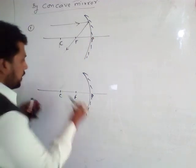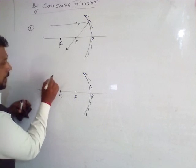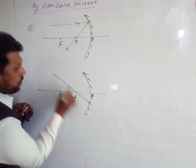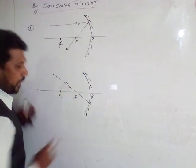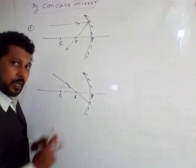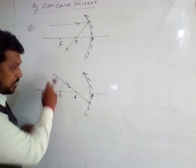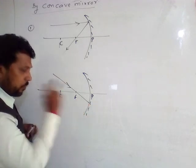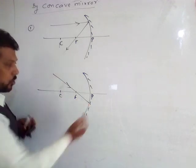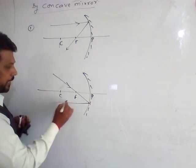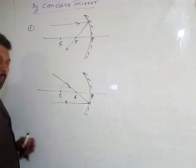And if this ray of light passes from F — if this ray of light passes from the Focal Point — then after reflection, it will be parallel. These two rules are the opposite of each other.